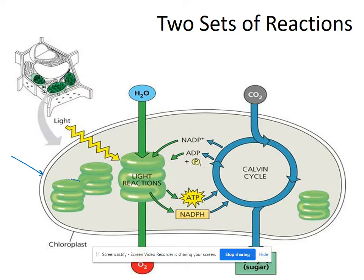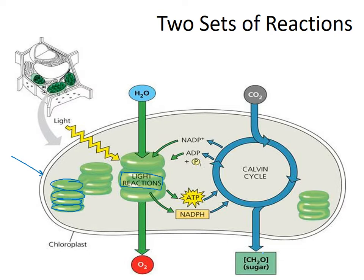But inside are these little stacks of disks called thylakoid disks. We have two sets of reactions in photosynthesis. The first set is called the light-dependent or just the light reactions, and they happen within these thylakoid disks. This is where water gets used and where oxygen gets produced. We make two forms of energy from the light-dependent reactions: ATP and NADPH.